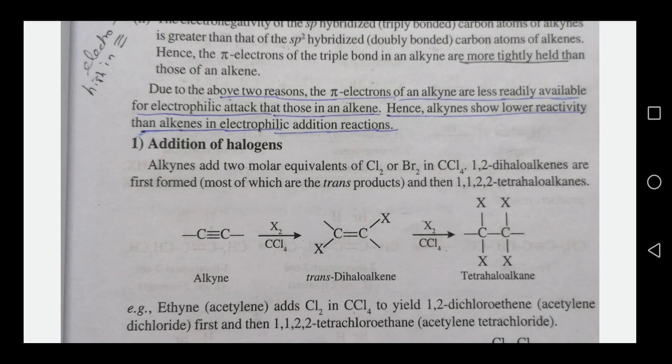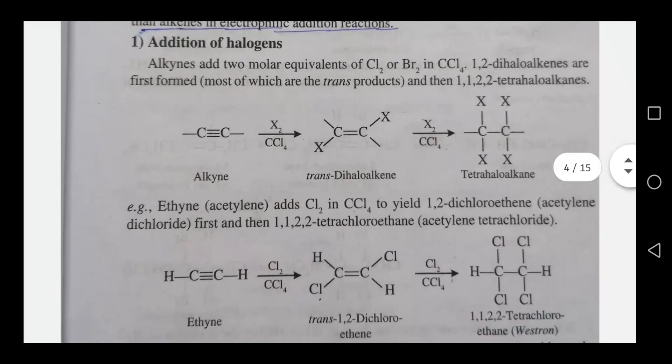For example, when we react with Cl2 in CCl4, the first product is trans-1,2-dichloroprop-2-ene. With excess halogen, the reaction proceeds further to give a tetrahalide product.